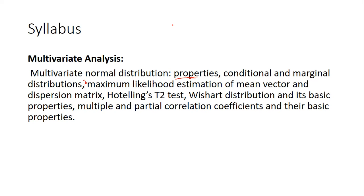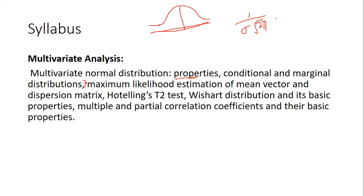We all know what normal distribution is — it is the central part of statistics. This is a normal distribution curve; it is a symmetric curve where mean, median, and mode are all equal to zero. The PDF in the univariate case is: one upon sigma root 2 pi, then exponential of...